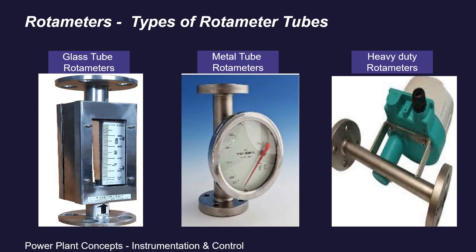Next, coming to the types of rotameter based on the material of construction of the vertical tube. We can classify them into three types: first is the glass tube rotameter, second is the metal tube rotameter, and third is the heavy-duty rotameter.